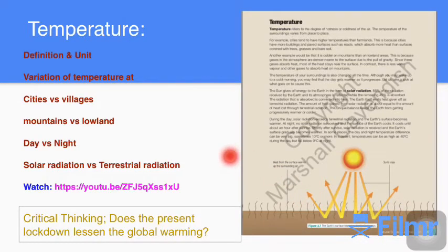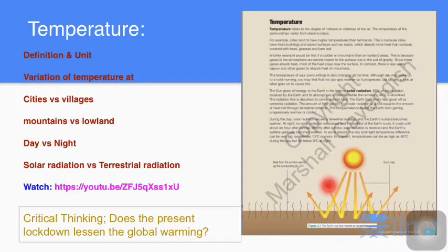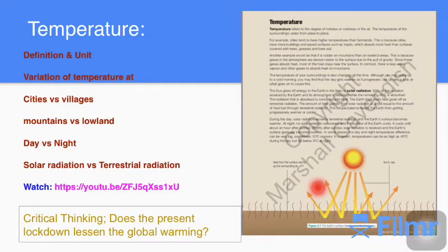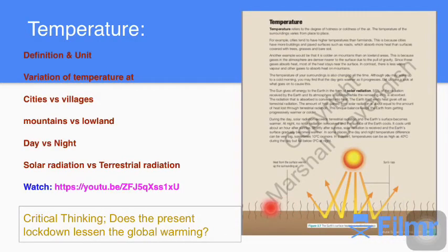55 percent of radiation received by the Earth and its atmosphere is reflected while the remaining 45 percent is absorbed. The radiation that is absorbed is converted into heat. The Earth itself emits heat given off as terrestrial radiation. The amount of heat gained from solar radiation is about equal to the amount of heat lost through terrestrial radiation.